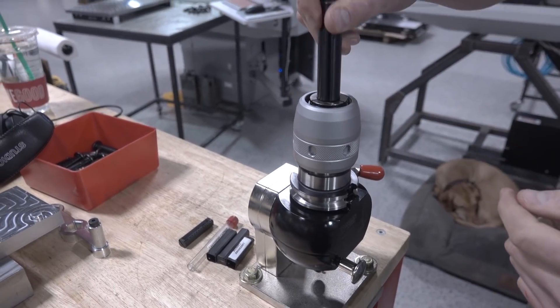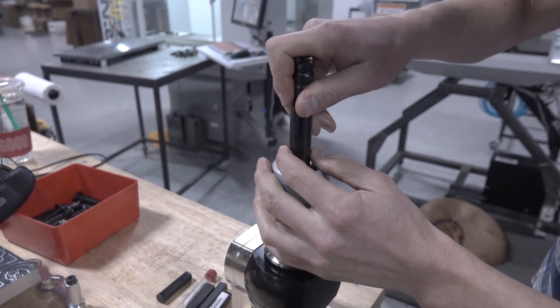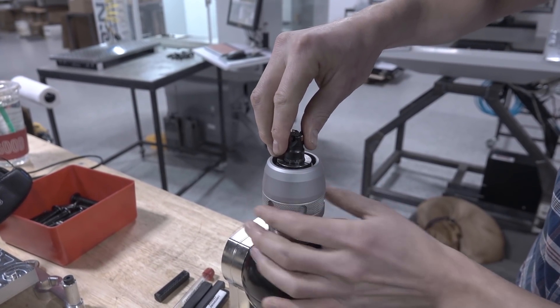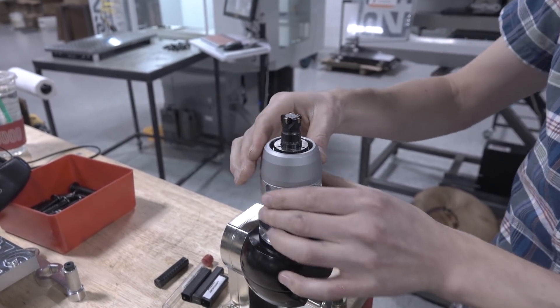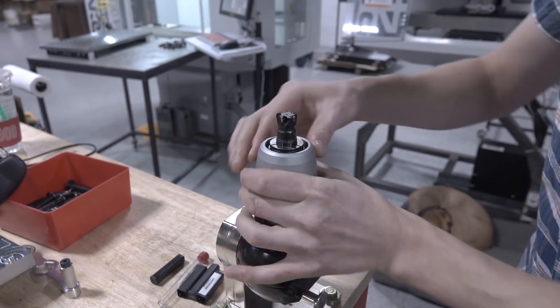We are using an end mill chuck. This one's from Mari Tool, and this is one of the most rigid and secure ways to hold a tool. Obviously, the downside is it's rather large and they're not inexpensive, but it's perfect here where I really want security and holding.